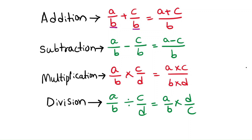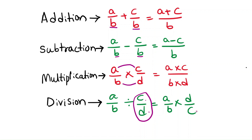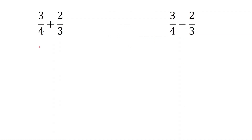The same approach applies to subtraction: if the fractions have the same denominator, take the common denominator and subtract the numerators. For multiplication, a/b × c/d, you just multiply numerator by numerator and denominator by denominator. For division, you take the reciprocal of the second fraction — so a/b ÷ c/d becomes a/b × d/c. Let's see these in examples.